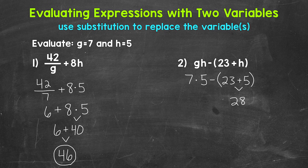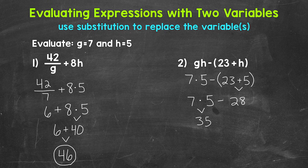Bring down everything we did not use: the subtraction sign, the 5, the multiplication sign, and the 7. Now we have multiplication and subtraction. Multiplication comes before subtraction, so let's multiply next: 7 times 5 equals 35. Bring down the subtraction sign and the 28, and we end with subtraction: 35 minus 28 equals 7. The value of this expression is 7 when g equals 7 and h equals 5.